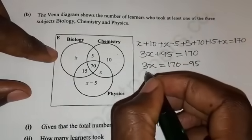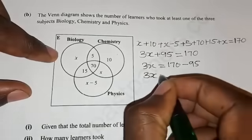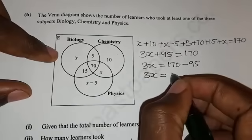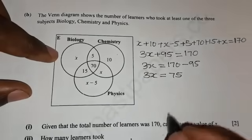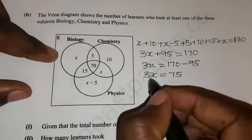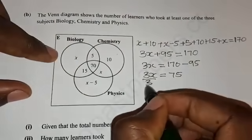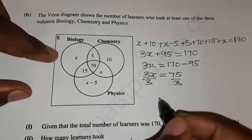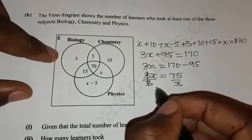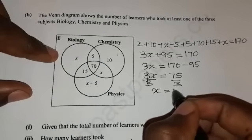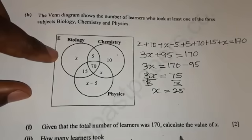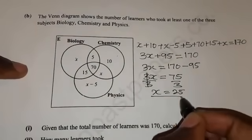So we are going to have 3x equals 170 minus 95, and this gives 3x equals 75. To get the value of x, divide both sides of this equation by 3. Then x equals 25.